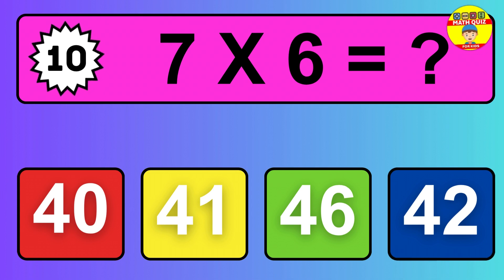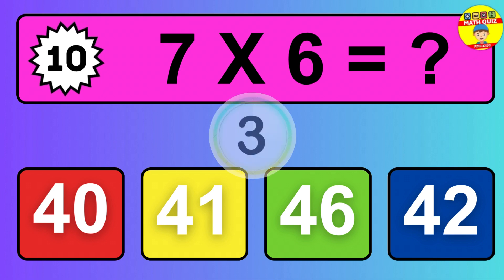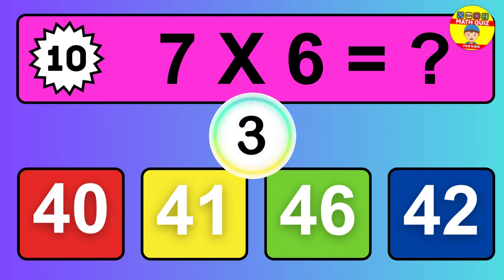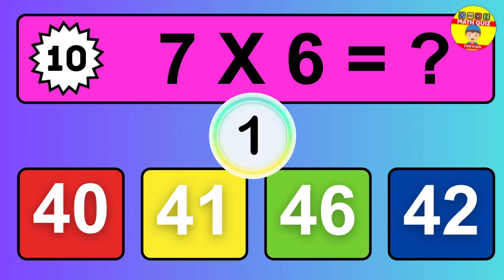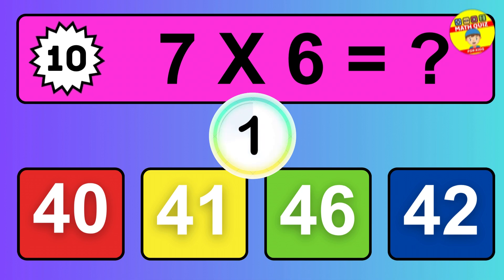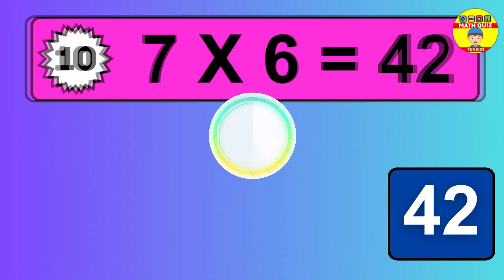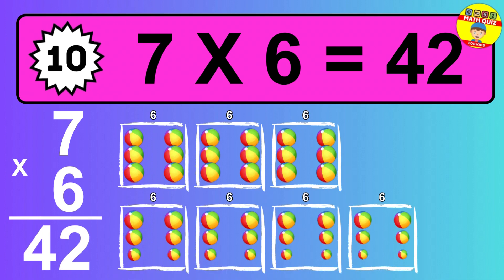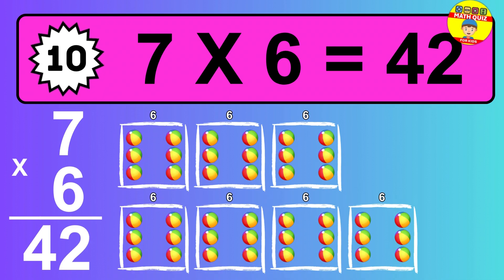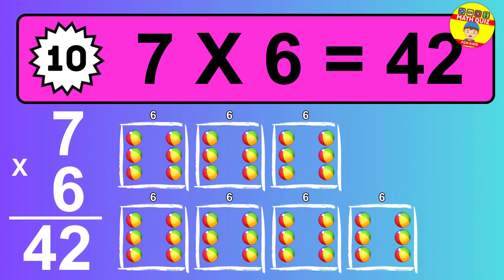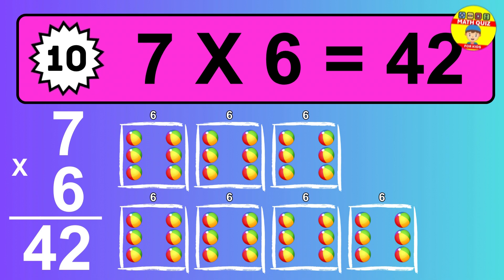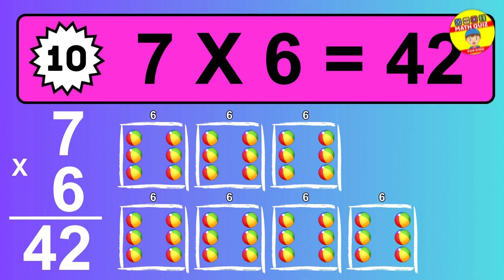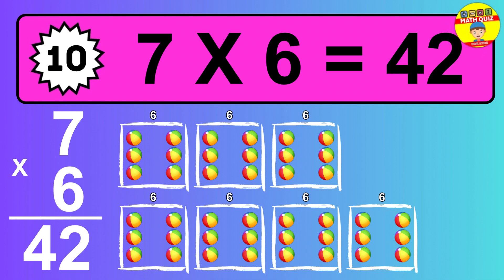Question 10. Seven times six equals what? So the answer is seven times six is forty-two. To calculate, we have seven groups with six balls each one. So how many balls do we have? Forty-two balls.